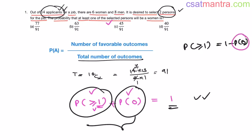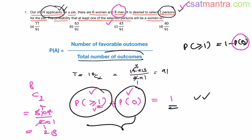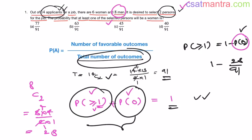Probability of no women means both selected persons are men. Out of 8 men, selecting 2: 8C2 = 8 × 7 / (2 × 1) = 28. Total outcomes remain 14C2 = 91. So: 1 − 28/91 = (91 − 28)/91 = 63/91. Our answer is B.